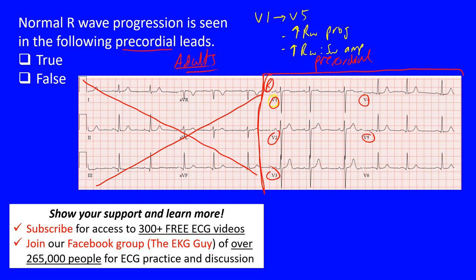In normal R wave progression, V1 to V5 should increase in amplitude. Remember, this is very important: the R wave equals the first positive deflection of our QRS complex. So our R wave is that positive deflection. If there are two R waves, we call the second one R prime. So here you can see these are the R waves.